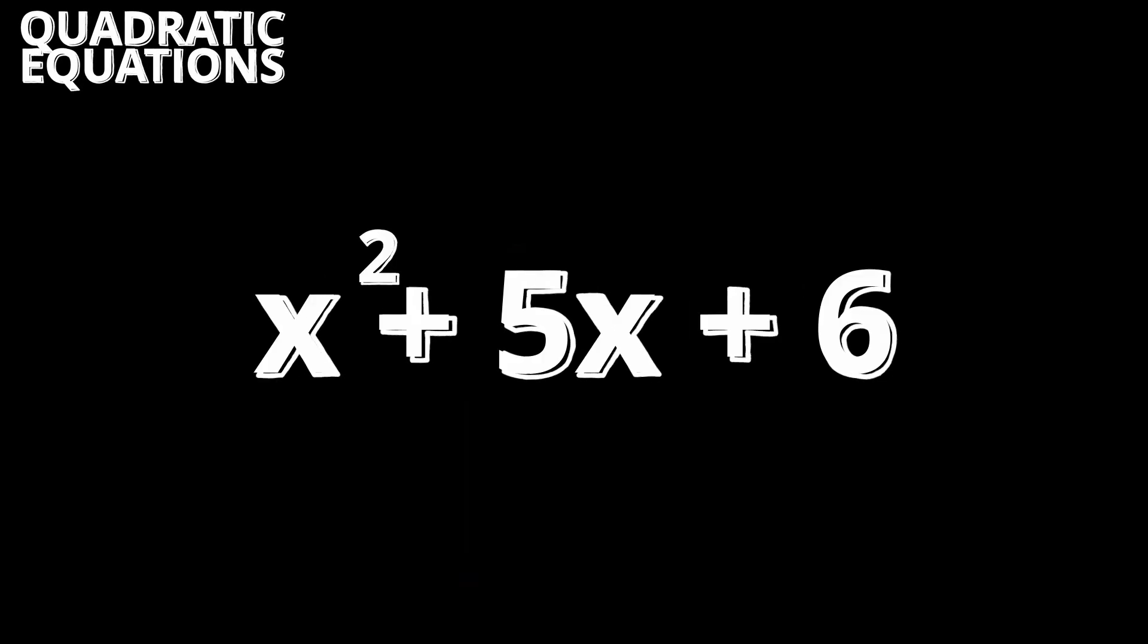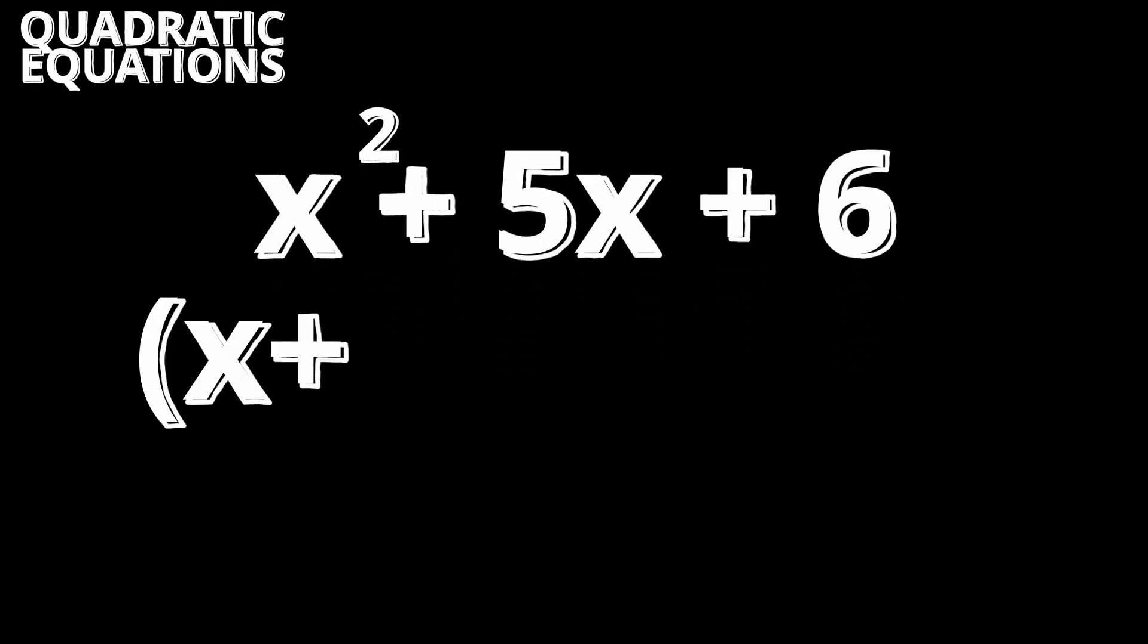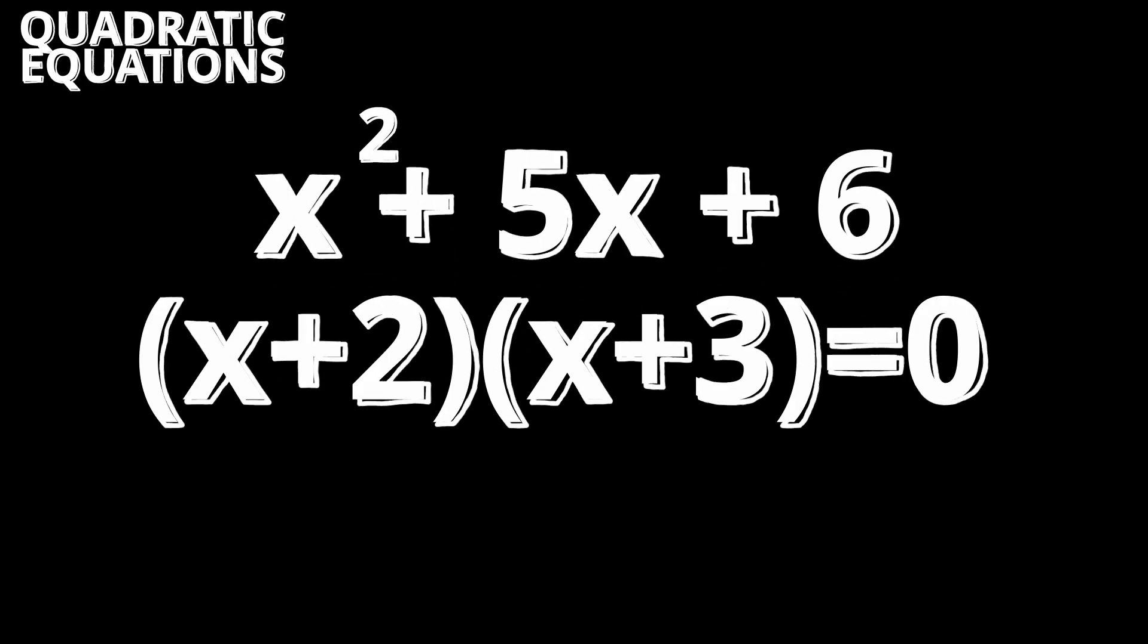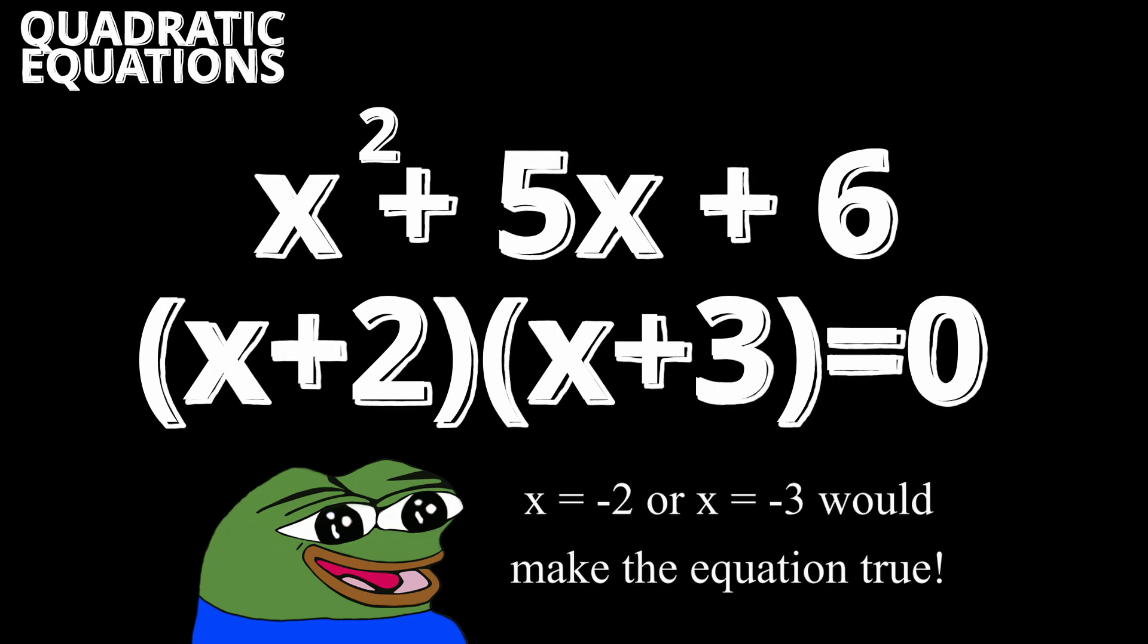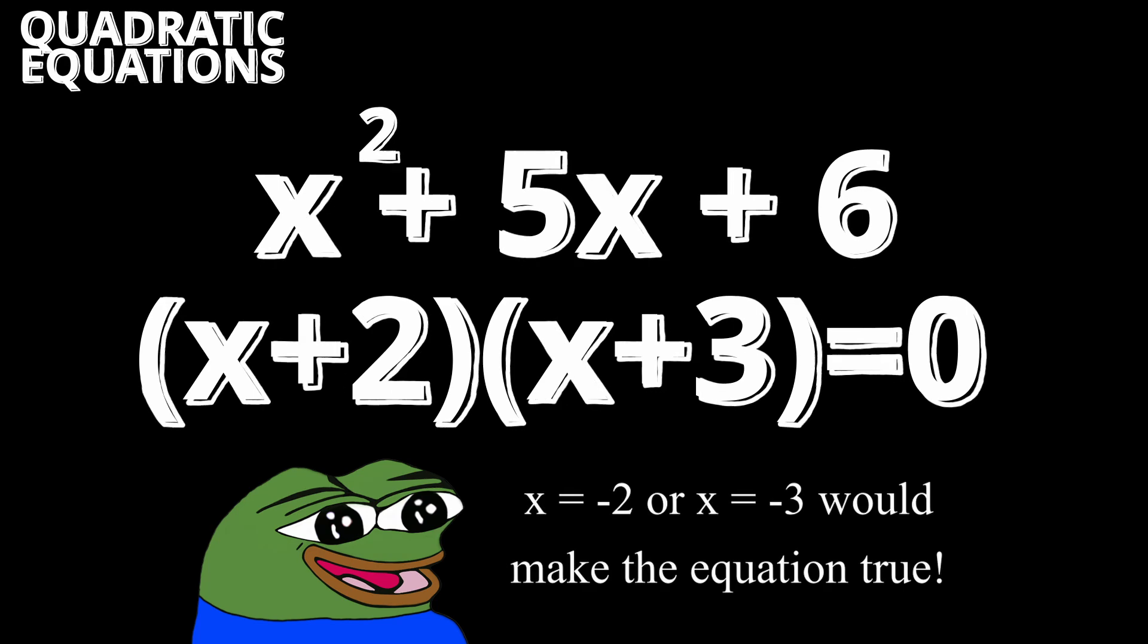For example, if we factor x squared plus 5x plus 6 into x plus 2 times x plus 3 equals 0, then x could be negative 2 or negative 3. These are the solutions.